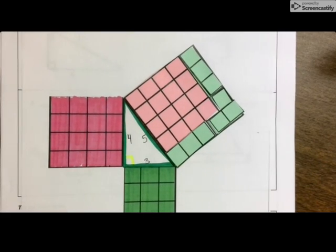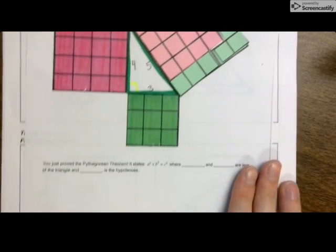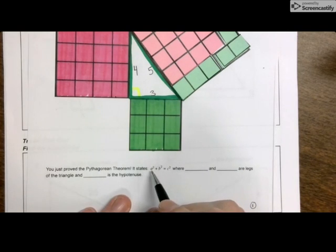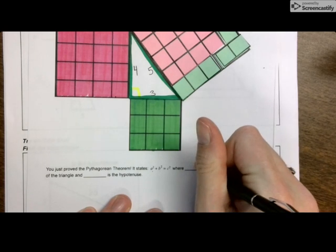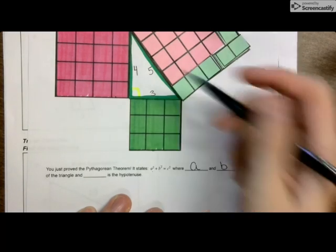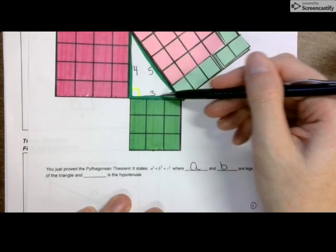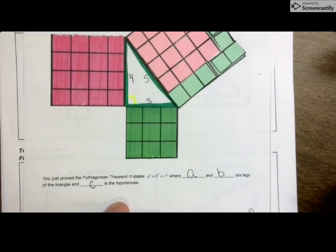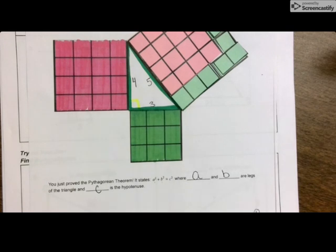So at the very bottom, what it says is, you just proved the Pythagorean theorem. It states that a squared plus b squared equals c squared, where a and b are the legs. So that's, in this case, it'd be three and four, and c is the hypotenuse. In this case, it would be five. The easiest way to tell they are the legs is going to be what we talk about next.